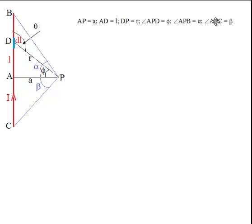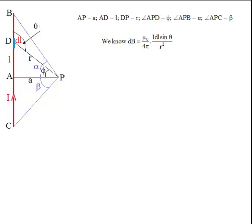Mathematically, AP = a, AD = l, DP = r, angle APD = φ, angle APB = α, and angle APC = β. Now we use the Biot-Savart law: dB = (μ₀/4π)(I dl sin θ)/r².